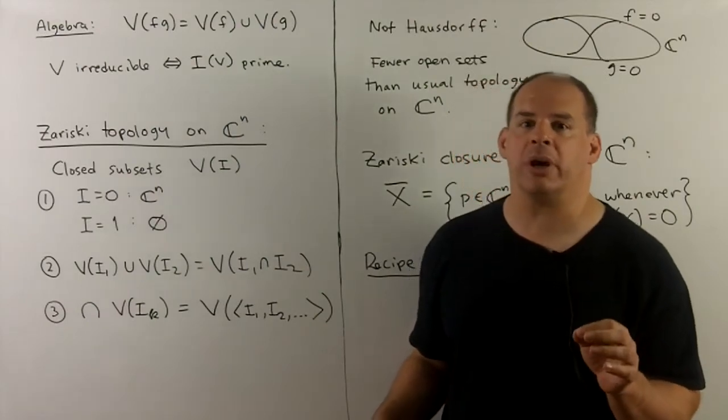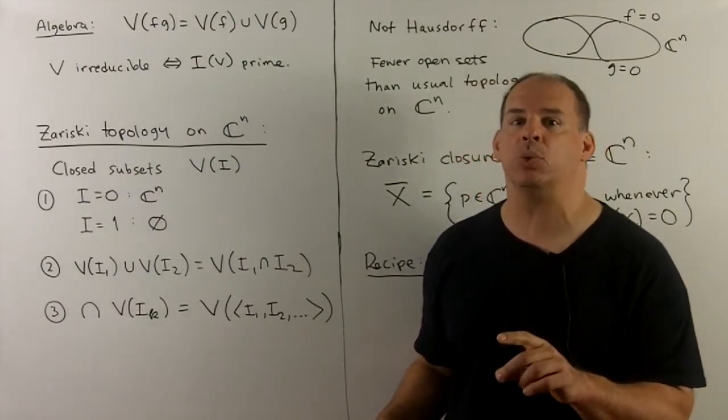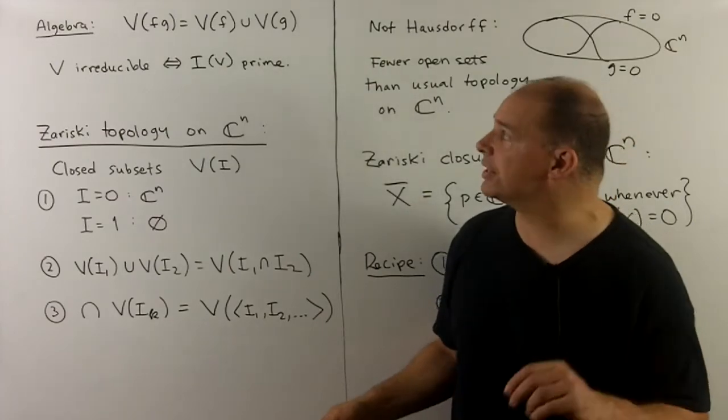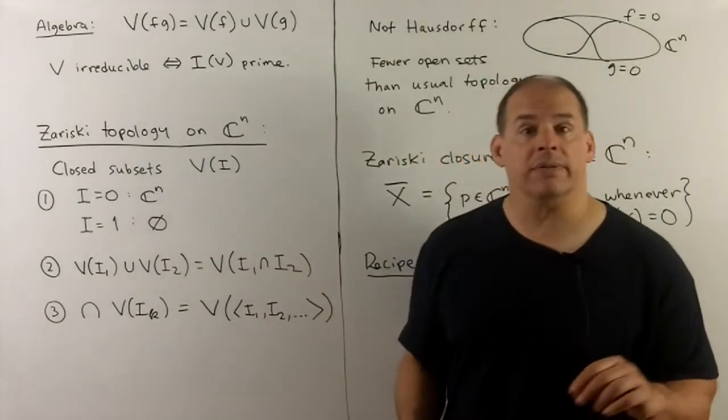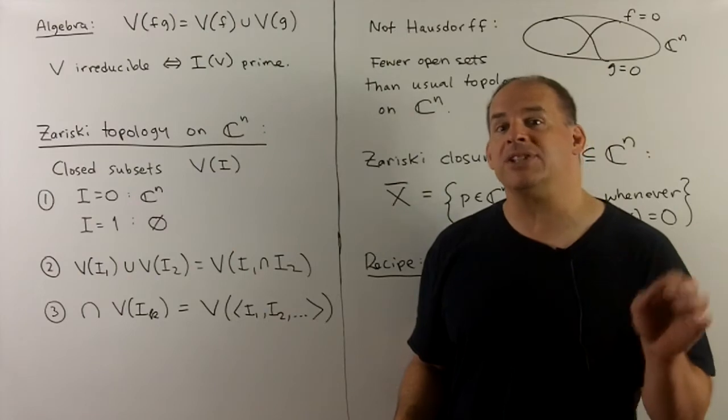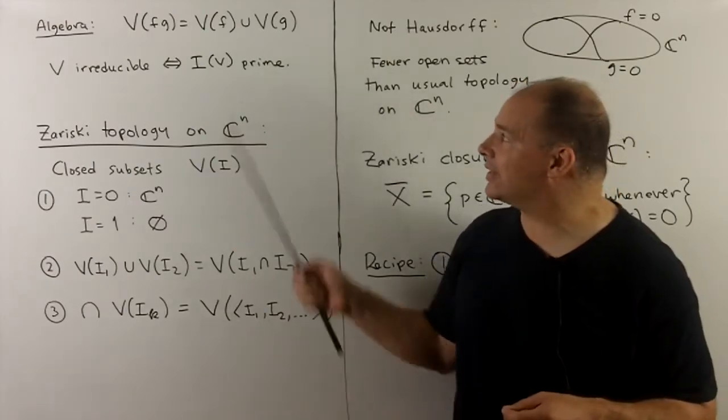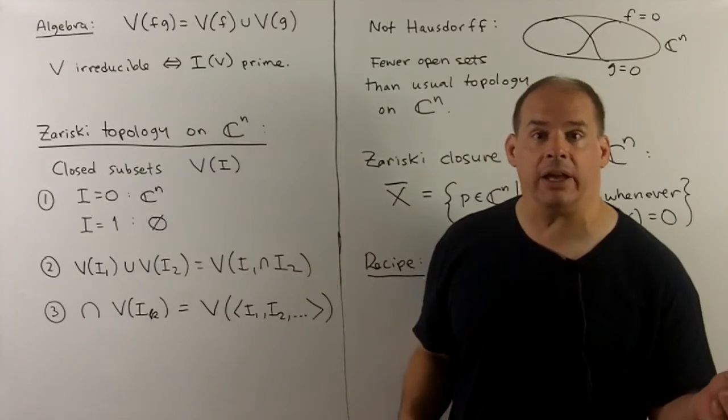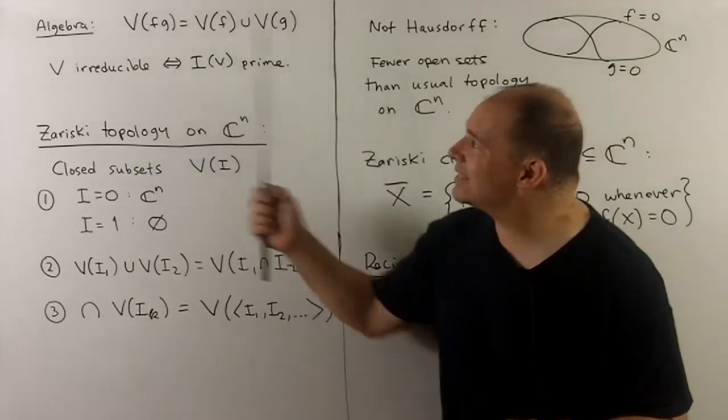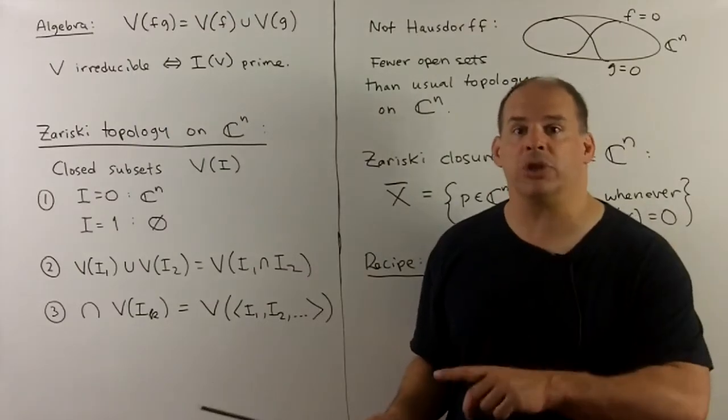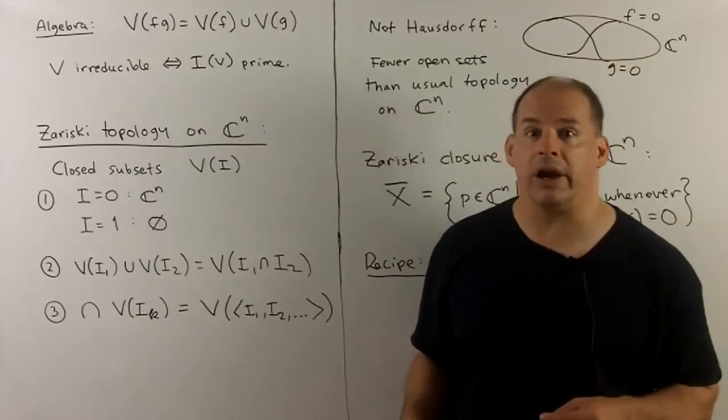An important feature of algebraic geometry is the interplay between geometry and the ring theory. For instance, we have the notion of irreducible. So if V is an irreducible variety, ring theoretically, the way we would say that is that the ideal for V is a prime ideal. We're going to see this idea over and over again, geometry pairing up with ring theoretic notions.